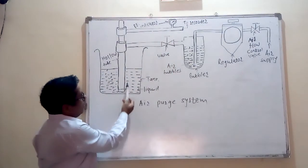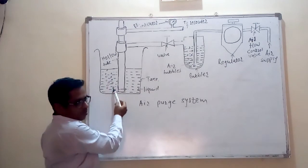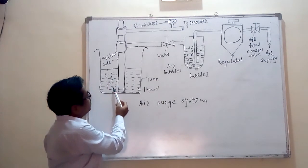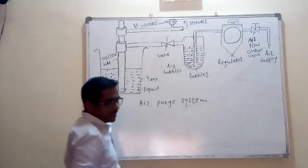But as the liquid level in the tank increases, there is resistance to this air bubbles which creates back pressure. And that back pressure is indicated on the pressure gauge.